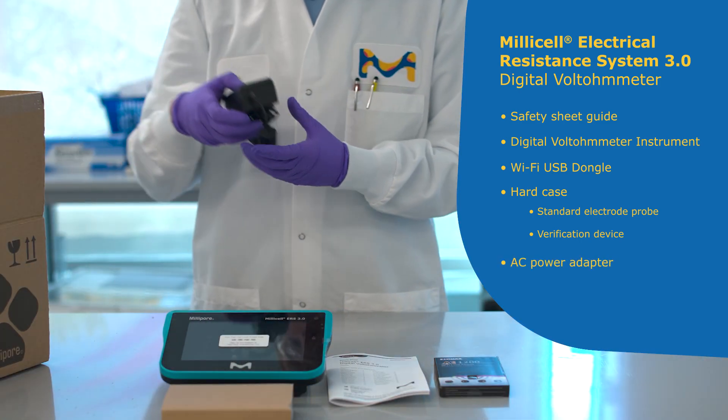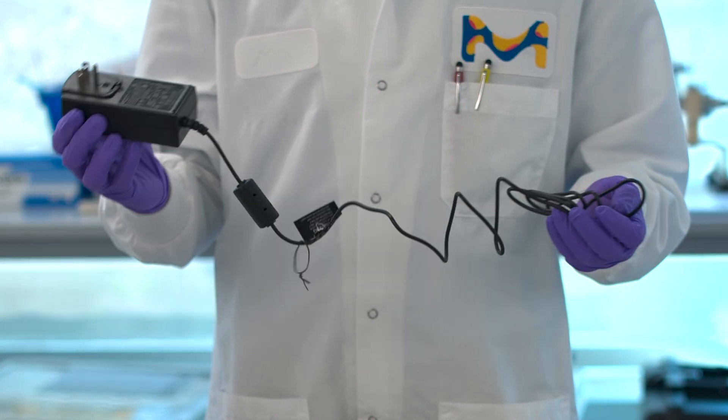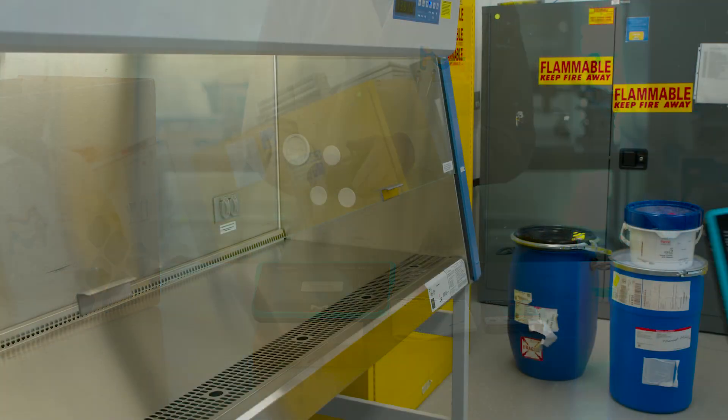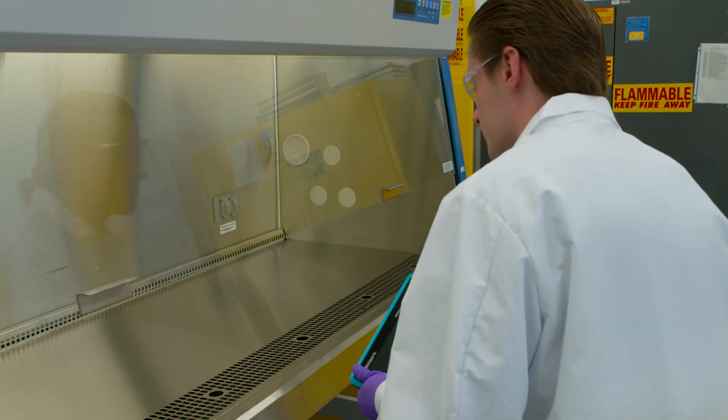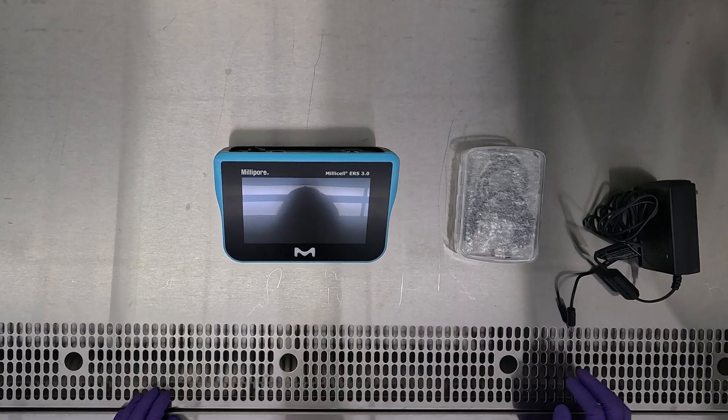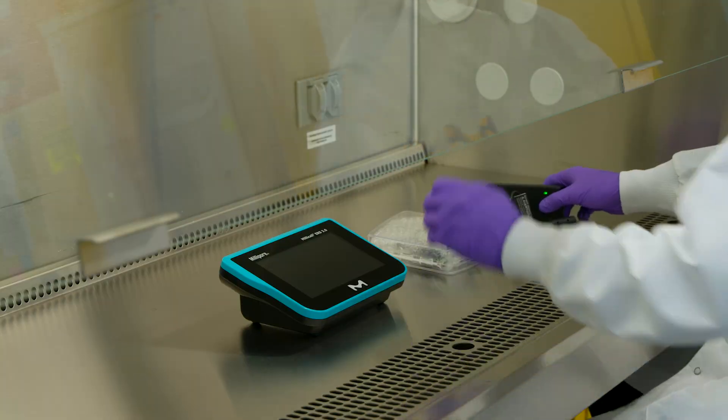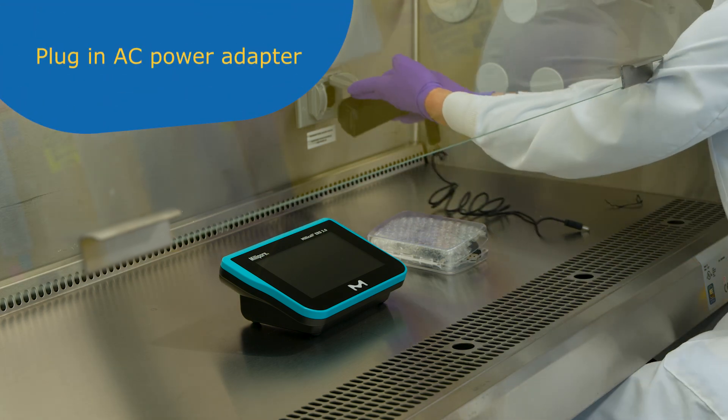The box also contains a power adapter for AC power. Once you take the instrument out of the box and into the hood, begin by plugging in the provided power supply to the properly labeled port on the back side of the device.